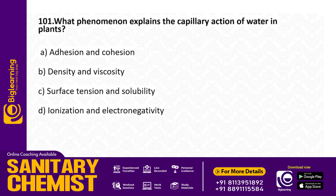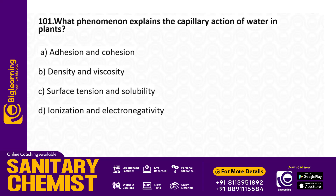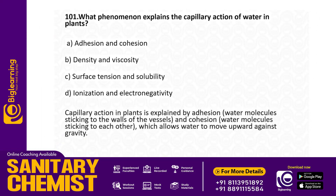What phenomenon explains the capillary action of water in plants? Options: adhesion and cohesion; density and viscosity; surface tension and solubility; ionization and electronegativity. Answer: Adhesion and cohesion. Capillary action in plants is explained by adhesion and cohesion, which allows water to move upward against gravity.